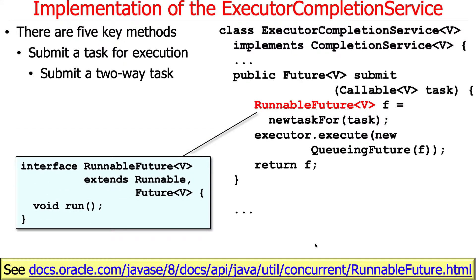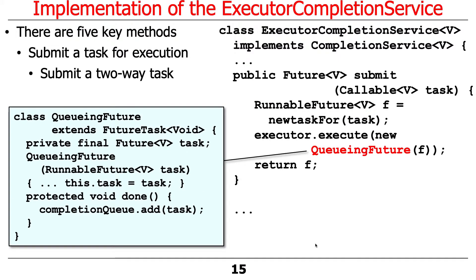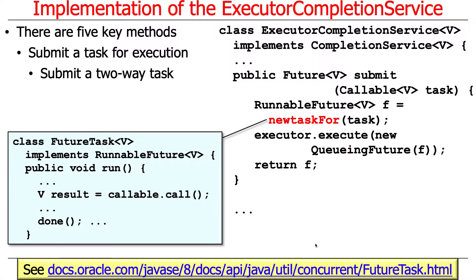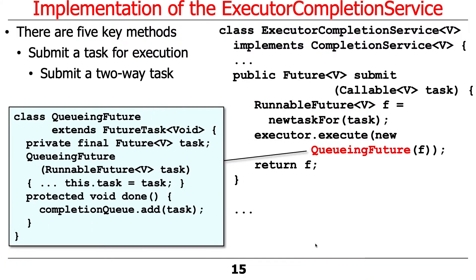What happens is we take the FutureTask — it's layer upon layer of adapters. We take the runnable future, which is a FutureTask whose run method will call the call method on the task passed in as a parameter to submit. Then we wrap that FutureTask — that runnable future — inside a QueueingFuture. All the QueueingFuture does is add a done hook method, and when that done hook method is called, it adds the completed task to the completion queue.